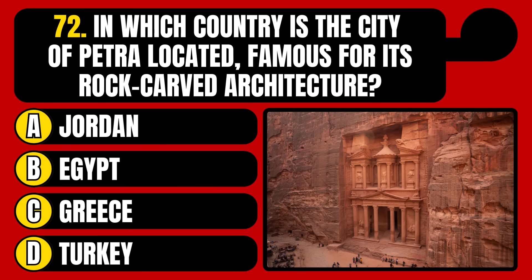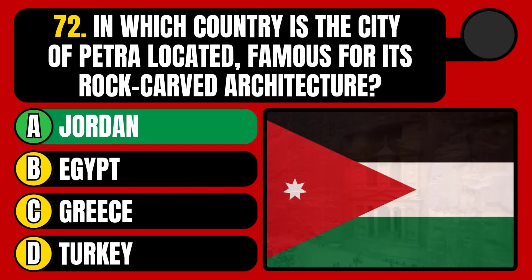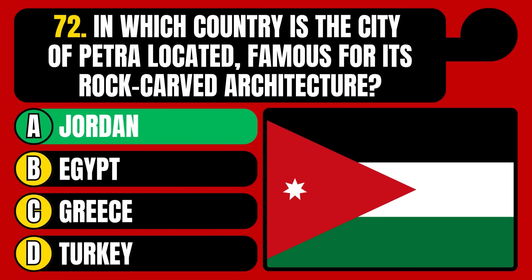In which country is the City of Petra located, famous for its rock-carved architecture? Jordan, Egypt, Greece, or Turkey? The correct answer is option A, Jordan.